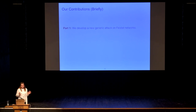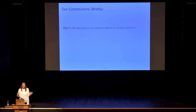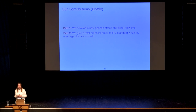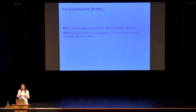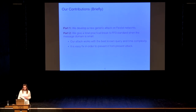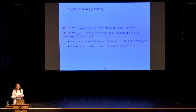I will divide the rest of the talk in two parts. In the first part, I will talk about generic attacks on Feistel networks, specifically focusing on three-round and four-round Feistel networks. I will use these to break the FF3 construction for small message domains. For small message domains, the attack will be practical and, as far as I know, this is the best-known query and time complexity. Good news is that we can patch the FF3 construction to prevent this attack.